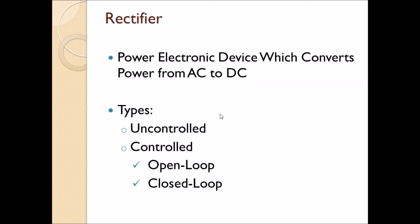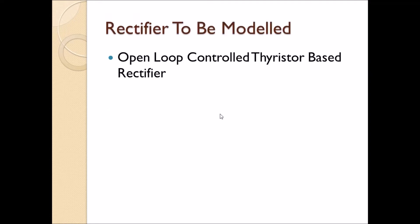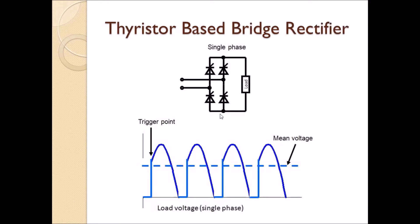A rectifier is a power electronic device which converts power from AC to DC. There are two types of rectifier: uncontrolled rectifier and controlled rectifier. In a controlled rectifier we can use an open loop control system or closed loop control system. In this session I will be explaining about the simulation of an open loop controlled thyristor based bridge rectifier. A single phase rectifier is shown in this slide — it consists of two legs and each leg consists of two thyristors, and the output DC voltage is shown here.